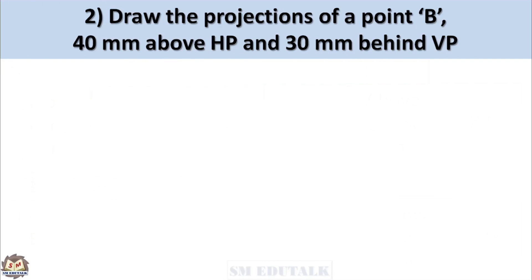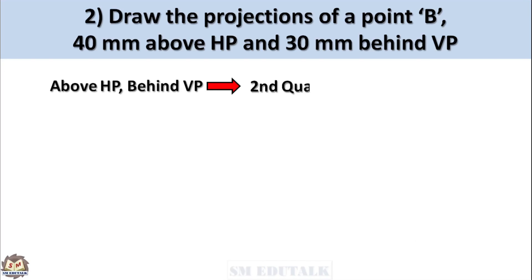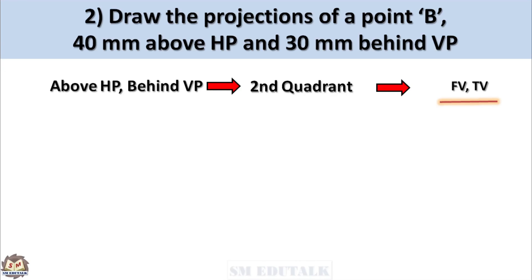We have completed the Part 1 video with the first problem. Now let us see the second problem. Draw the projections of a point B, 40mm above HP and 30mm behind VP. The position of point B is above HP and behind VP, so point B is in the second quadrant. Hence, both the front view and top view should come above the XY line.